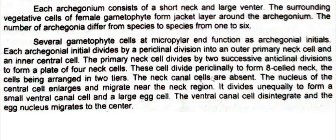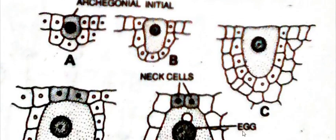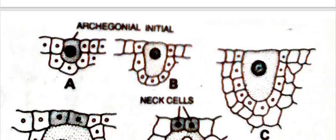The neck canal cells are absent. The nucleus of the central cell enlarges and migrates near the neck region, then divides unequally to form a small ventral canal cell and a large egg cell. The ventral canal cell disintegrates and the egg nucleus migrates toward the center. Here we can see diagrams of the development of the archegonium — one archegonial initial cell, with several similar cells acting as archegonial initials toward the micropylar end in the female gametophyte.